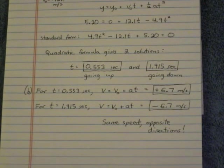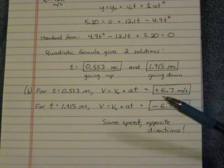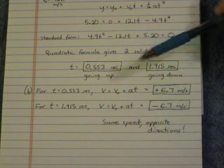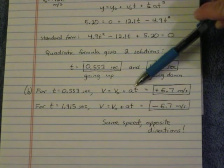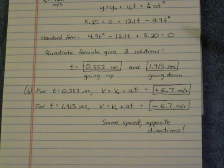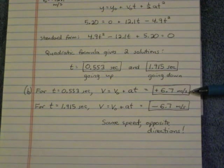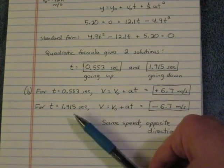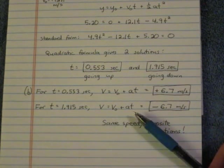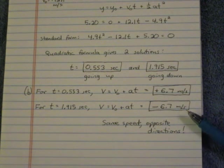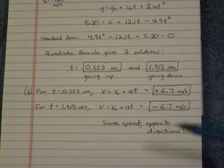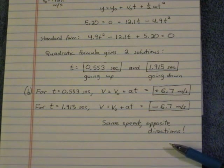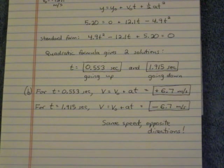Part B then asks, what is the velocity at those times? Well, you can plug into the equation V equals V naught plus AT. And for the first time, going up 0.553 seconds, plug that in. Remember to make acceleration negative 9.8. And you should get an answer of plus 6.7 meters per second. For the second time of 1.915 seconds, plugging in, you should get negative 6.7 meters per second. And notice that going up and coming down at the same height, they're the same speed, just going in opposite directions. And that's what the positive and the negative mean. And that is all for Chapter 2.